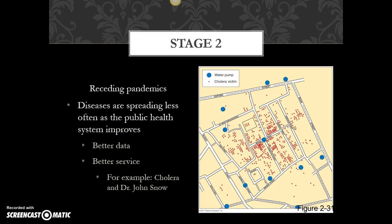Stage two — now we've got our pandemics receding. People are getting healthier and diseases are spreading less. A lot of times that's a direct result of improvements in the public health system. Public health refers to those measures that the government takes to help ensure that everybody stays healthy.